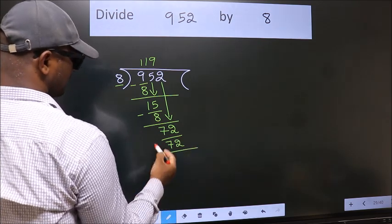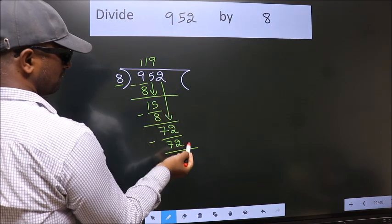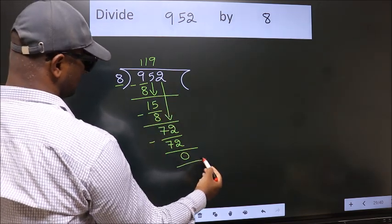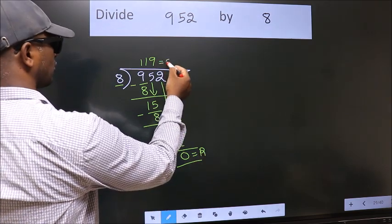Now we subtract. We get 0. No more numbers to bring down. So we stop here. This is our remainder. This is our quotient.